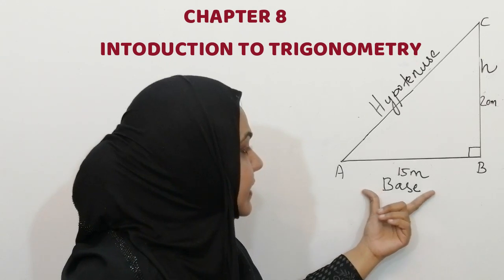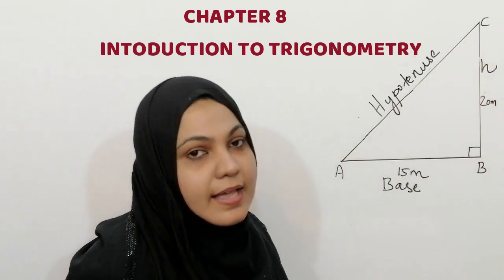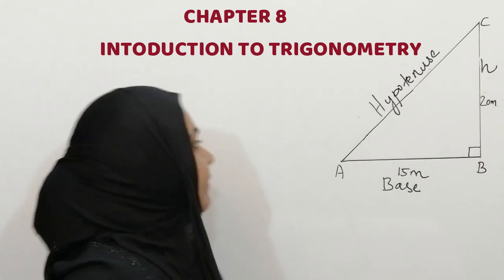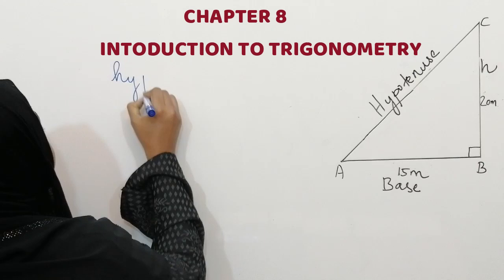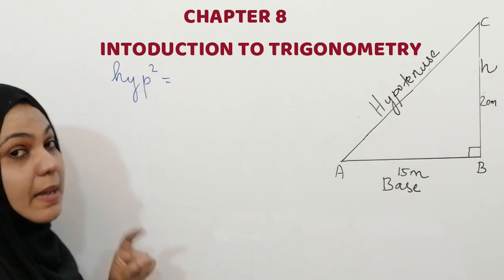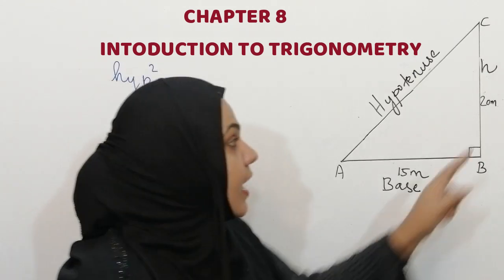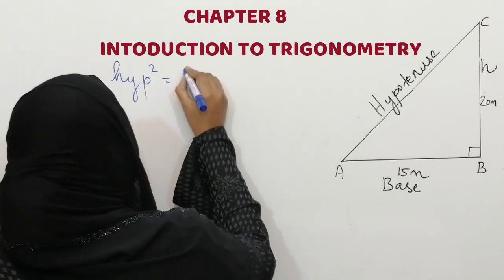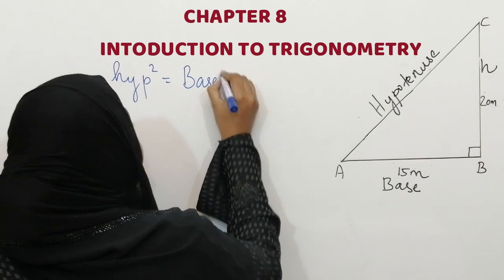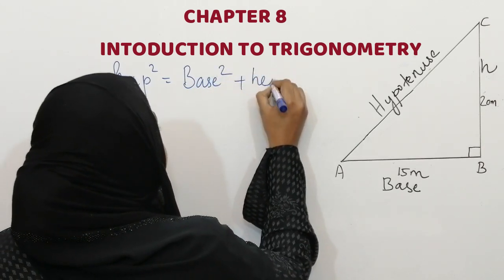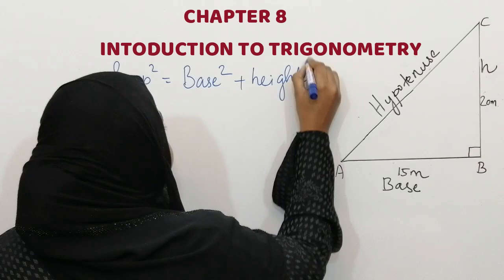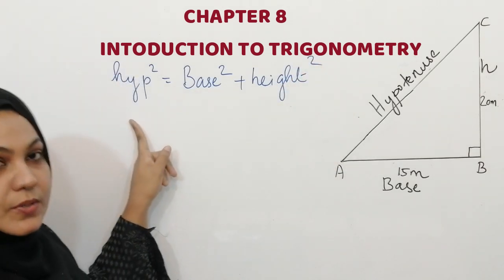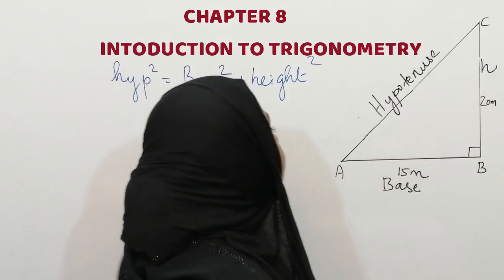Here you can see this is the base and height. So how we can find hypotenuse? The formula is: hypotenuse square is equal to the sum of the squares of base and height.